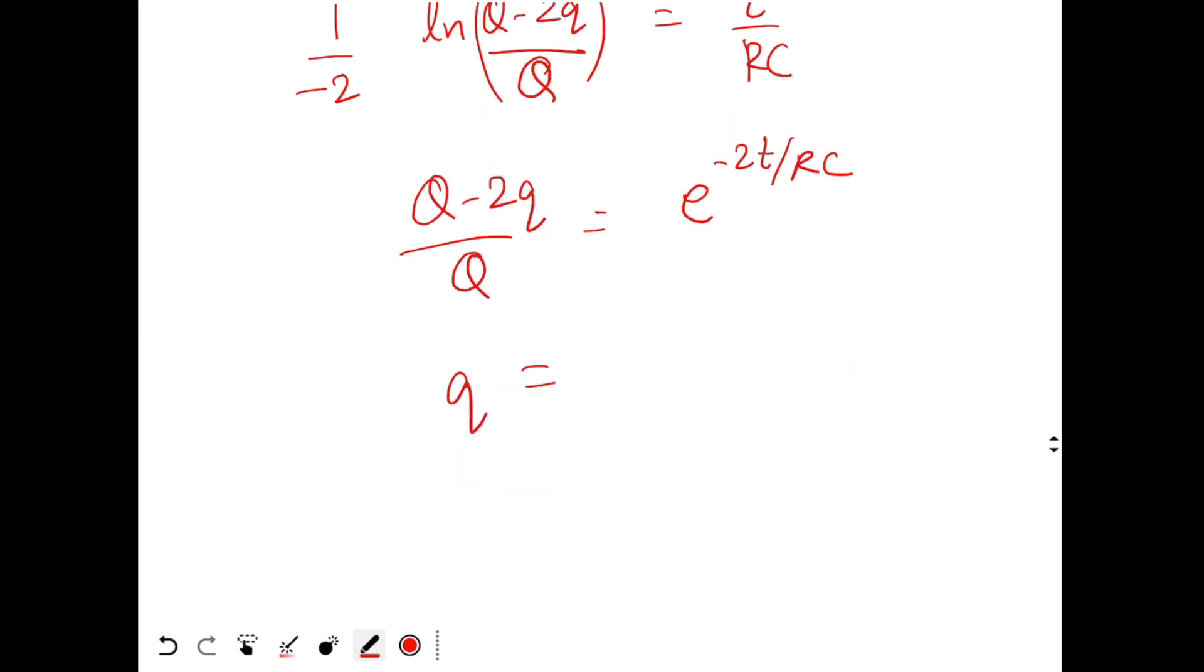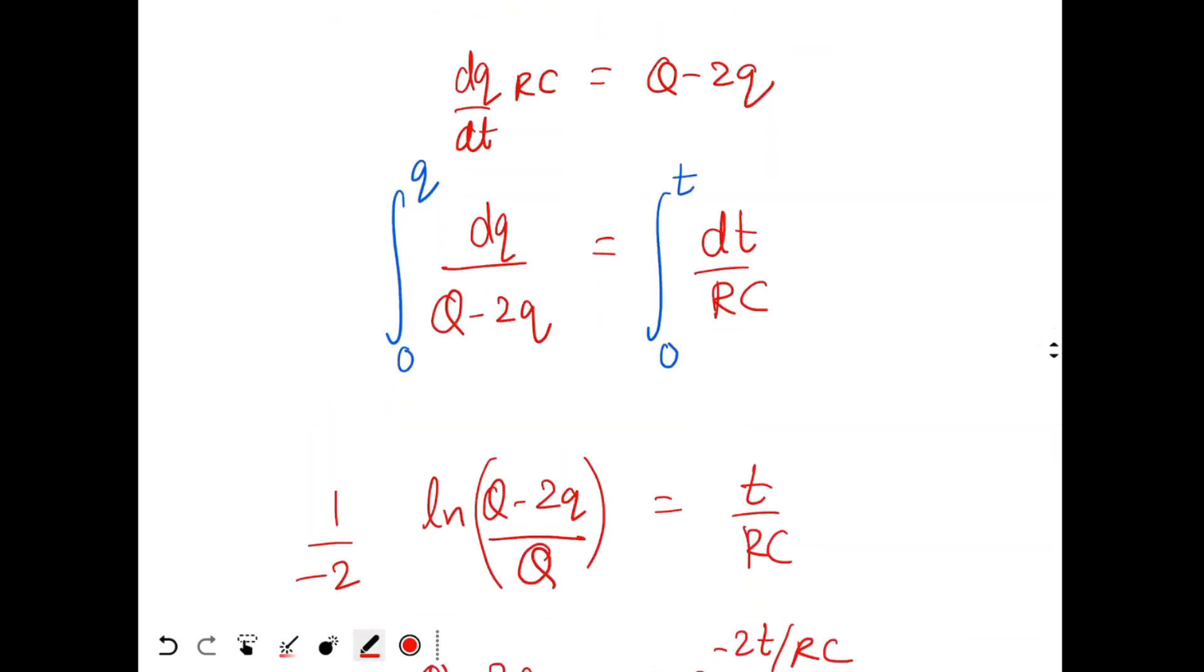Or Q is equal to Q by 2, 1 minus e power minus 2T by RC. This is your charge on the second capacitor as a function of time. That's what the question was asking, right? Find the charge on the second capacitor. So this is the answer. Thanks.